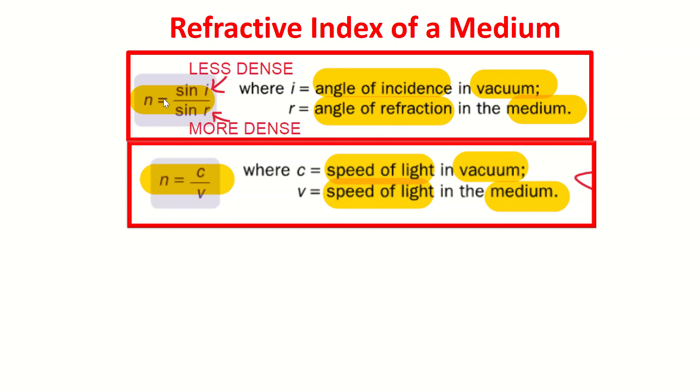Refractive index is given as sin i over sin r where i is the angle of incidence in a vacuum and r is the angle of refraction in the medium. There's another formula which is actually easier to calculate.